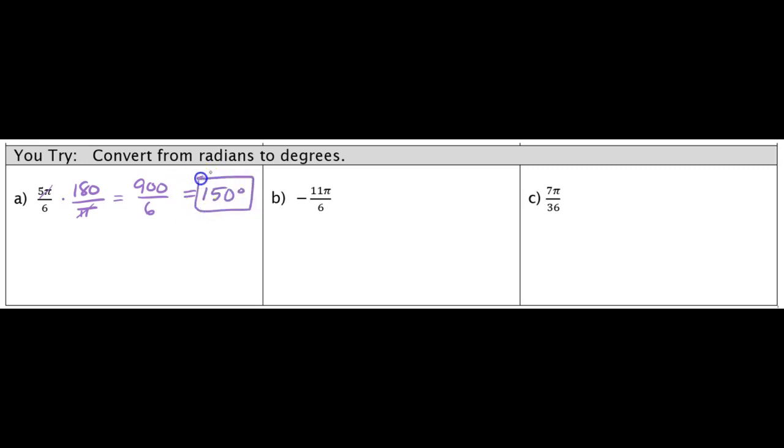Now you don't have to do that every time. To save yourself a little bit of work, what you can put in your calculator is you can do 5 times 180 divided by 6, and it will do all of that in one step for you and take you right to the answer of 150.